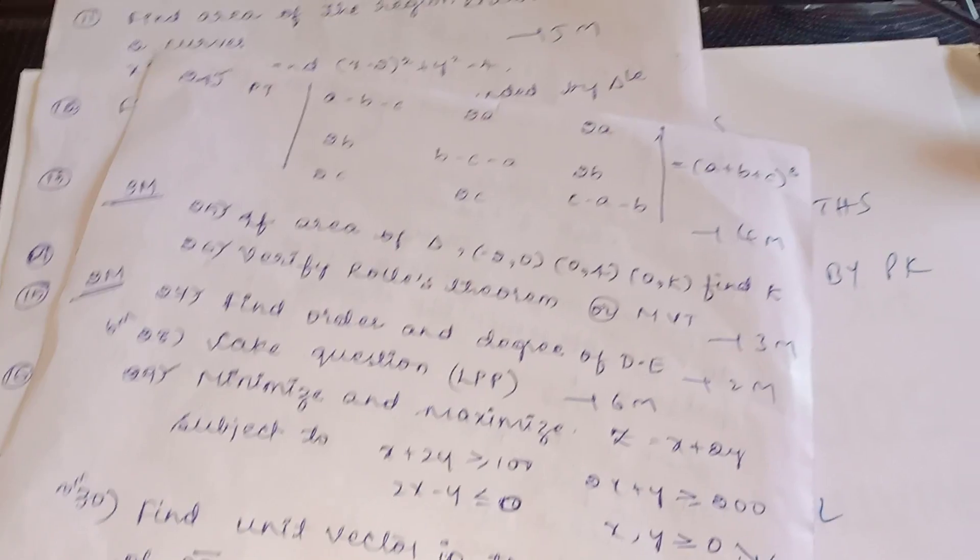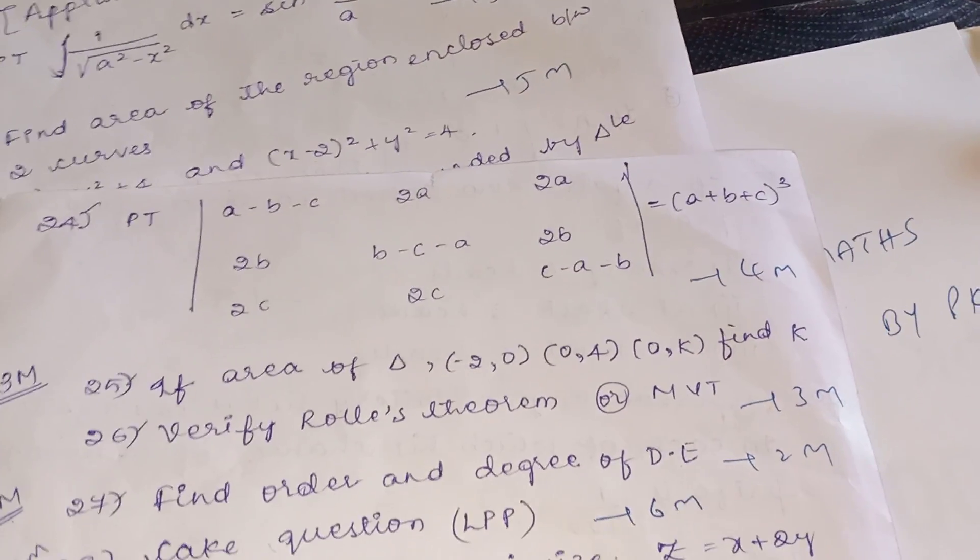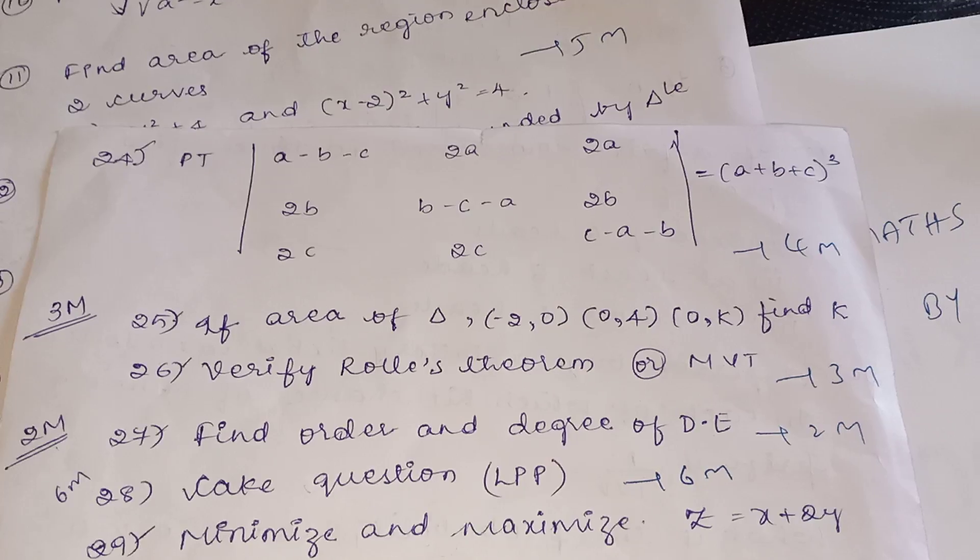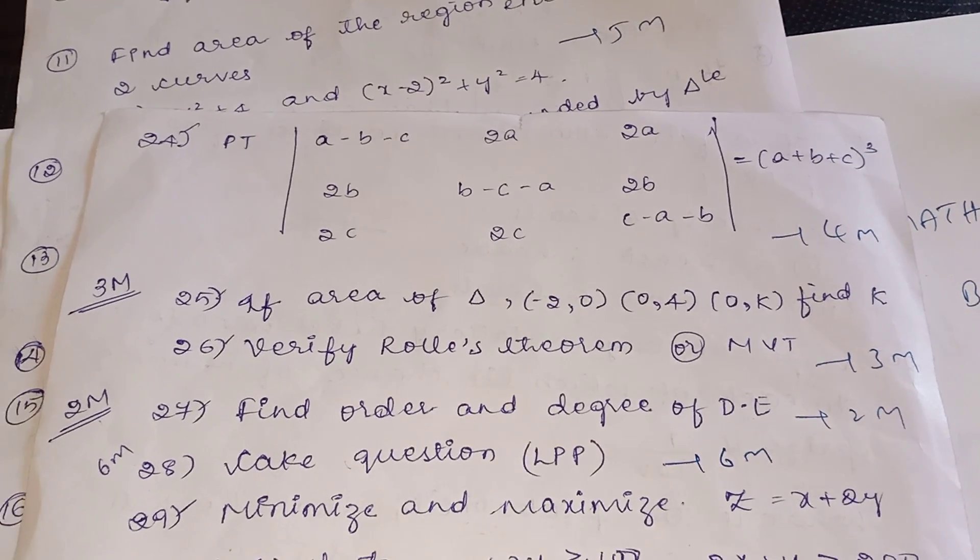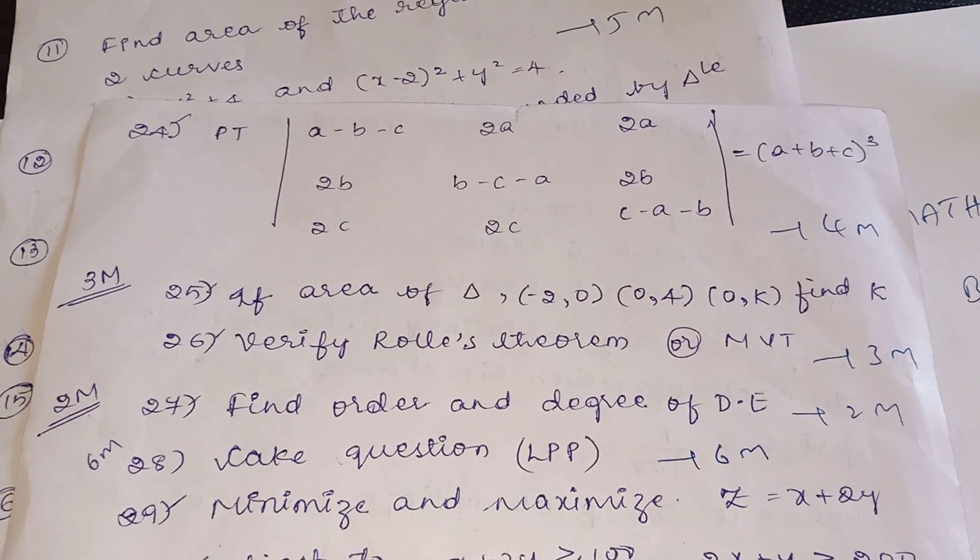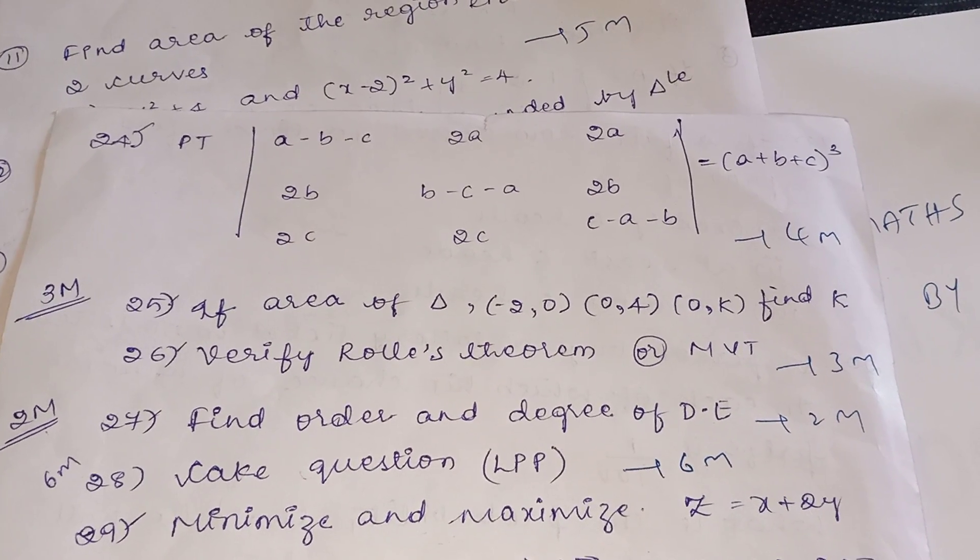If you go to the four mark question in determinants, find that determinant value like this they will ask. And if you come back to three mark question, the area of the triangle question. Find the area of triangle, or area of the triangle is given, find the value of k. In determinants, that question.